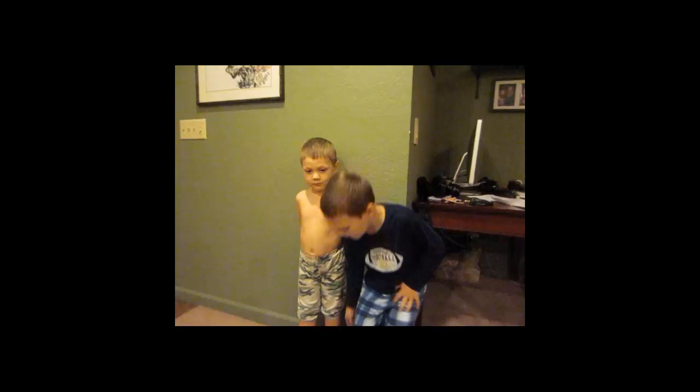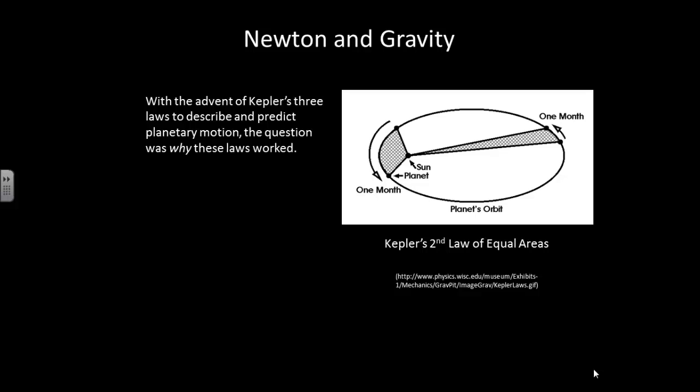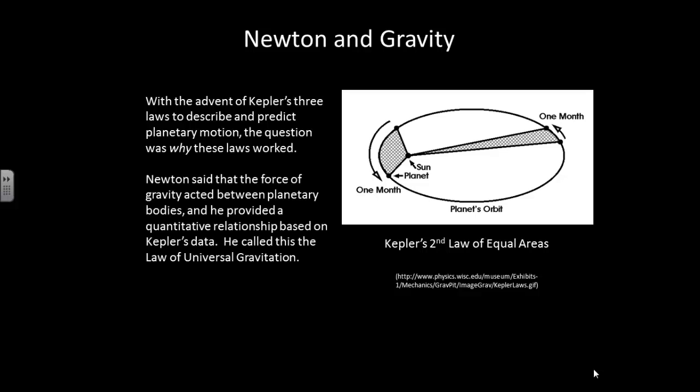Let's work to develop a deeper understanding of gravity. In the early 1600s, Kepler developed a set of three laws that described planetary motion. Now these three laws predicted the planetary motion very well, but the question remained as to why these laws worked. It was Newton that came around and said that there was a force of gravity that acted between planetary bodies, and he provided a quantitative relationship that was based on Kepler's data. He called this the law of universal gravitation.